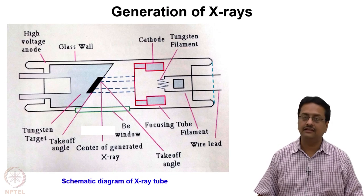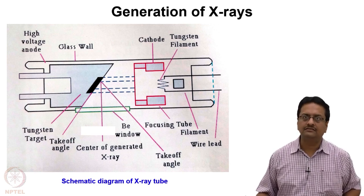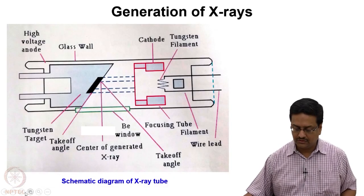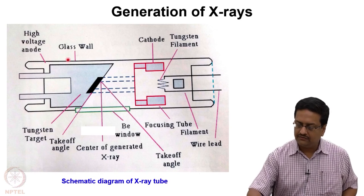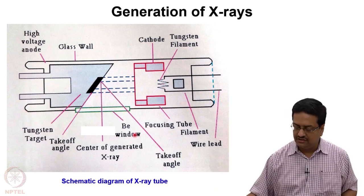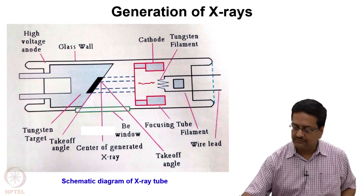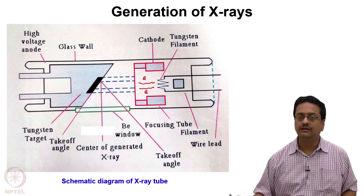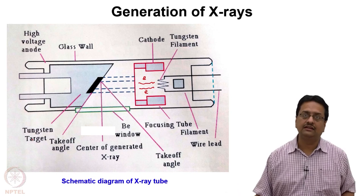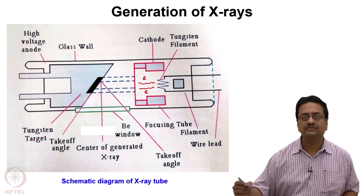Now, regarding the generation of X-rays — what we are trying to understand is how the X-ray tube is built and what parts it has. This X-ray tube is a glass-walled tube kept under high vacuum. Inside, there is a tungsten filament which is used to generate electrons in this evacuated chamber. Those electrons are then emitted from the filament and allowed to run towards the anode. In X-ray crystallography, we generally use copper, molybdenum, or silver as the anode because of their characteristic wavelengths.